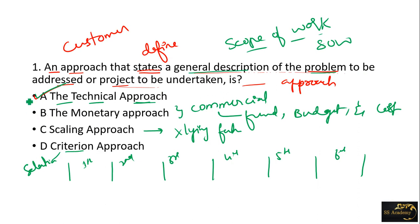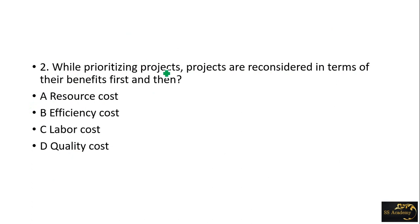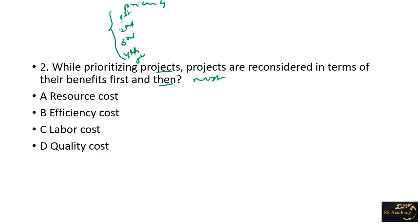The right answer for an approach that states or defines a general description of the problem to be addressed or any project to be undertaken is the technical approach. Next question: while prioritizing the projects, projects are reconsidered in terms of their benefits first. Then second is resource planning, third is labor cost, fourth is quality, and fifth is efficiency cost.